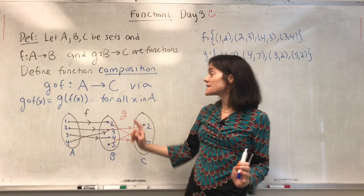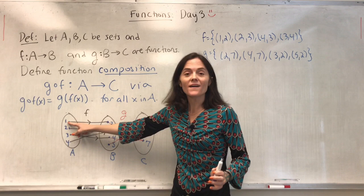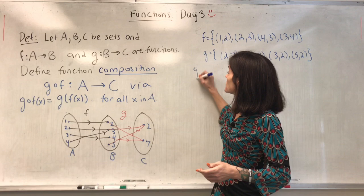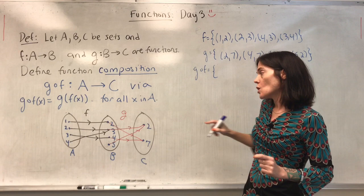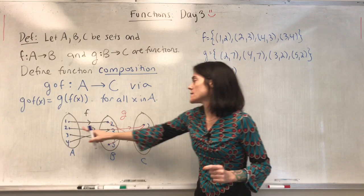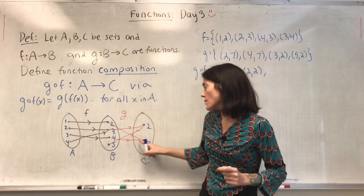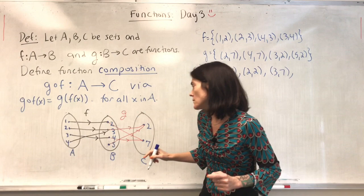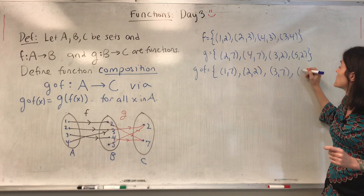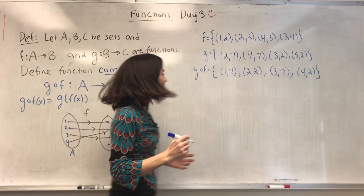To get G composed F, first you move by F, then you move by G. So 1 goes to 2, then to 7 — so (1,7). 2 goes to 3, then to 2 — so (2,2). 3 goes to 4, then to 7 — so (3,7). And 4 goes to 3, then to 2 — so (4,2).